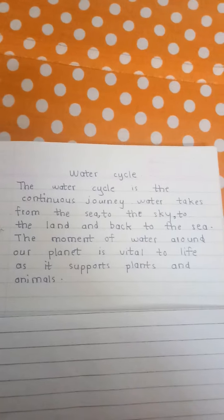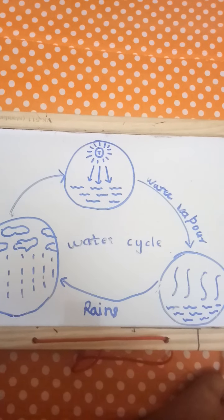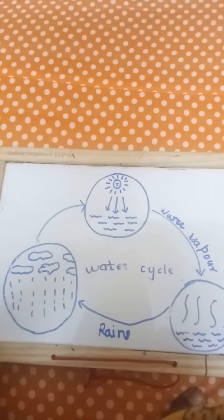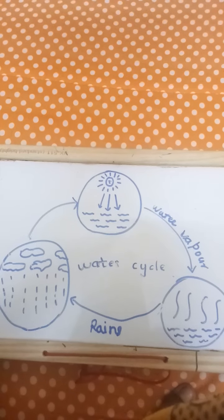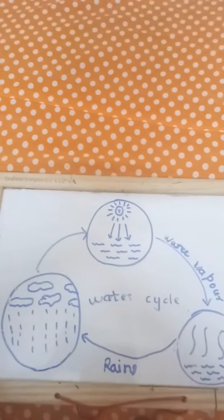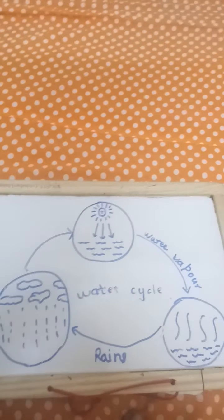Hello friend, do you know what is water cycle? I will teach you. See this diagram. Can you tell what is this? Can you tell what is this? Yes, it is a sun.